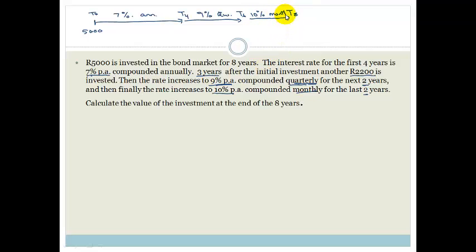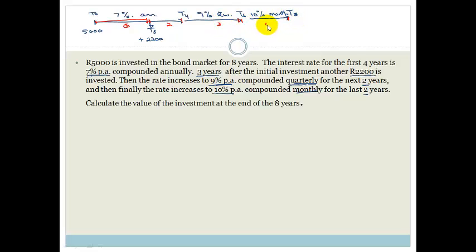To add more to this, it says three years after the initial investment, another R2,200 is invested. So at T3, we have an investment of plus R2,200. If we look at this, we'd actually have quite a few sections: from T0 to T3 is section 1, then T3 to T4 is section 2, T4 to T6 is section 3, and T6 to T8 is section 4. So we need to break this up into four sections, and that's why we use a number line.